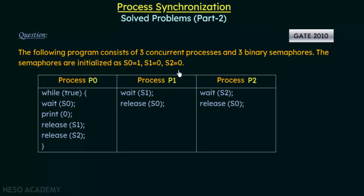We have already studied binary semaphores. Since it is a binary semaphore, the semaphores can have only two values: either 0 or 1. When a semaphore's value is 0, it means that semaphore is occupied or being held. If the semaphore's value is 1, that means it is free and can be used.